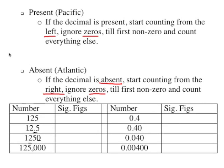Back to present — the decimal being present is associated with the Pacific left side, and absent Atlantic starting from the right side. The saying is: if the decimal is present, we start counting from the left, ignore zeros to the first non-zero number, and count everything else. If the decimal is absent, we start counting from the right, we ignore zeros to the first non-zero, and count everything else.